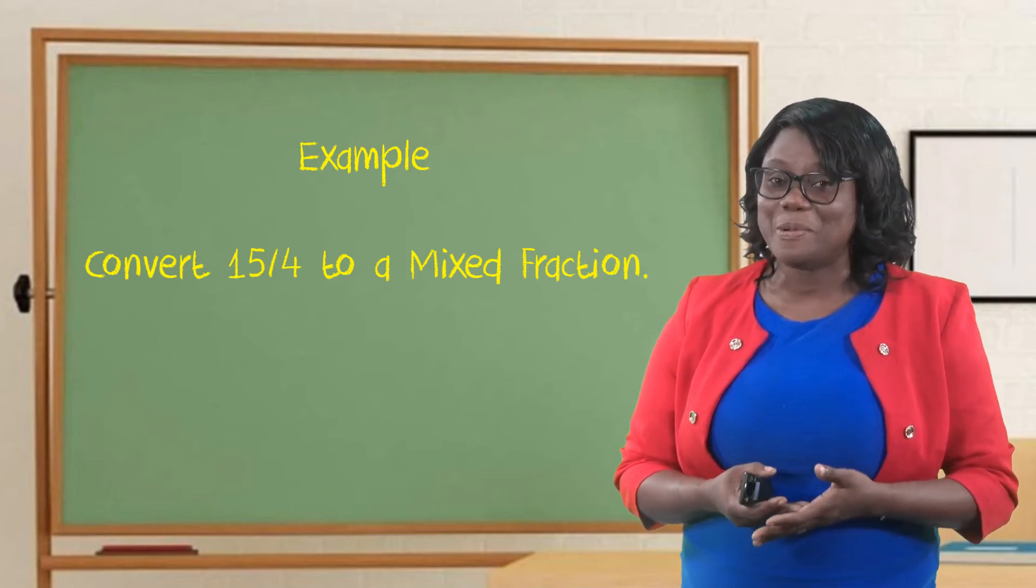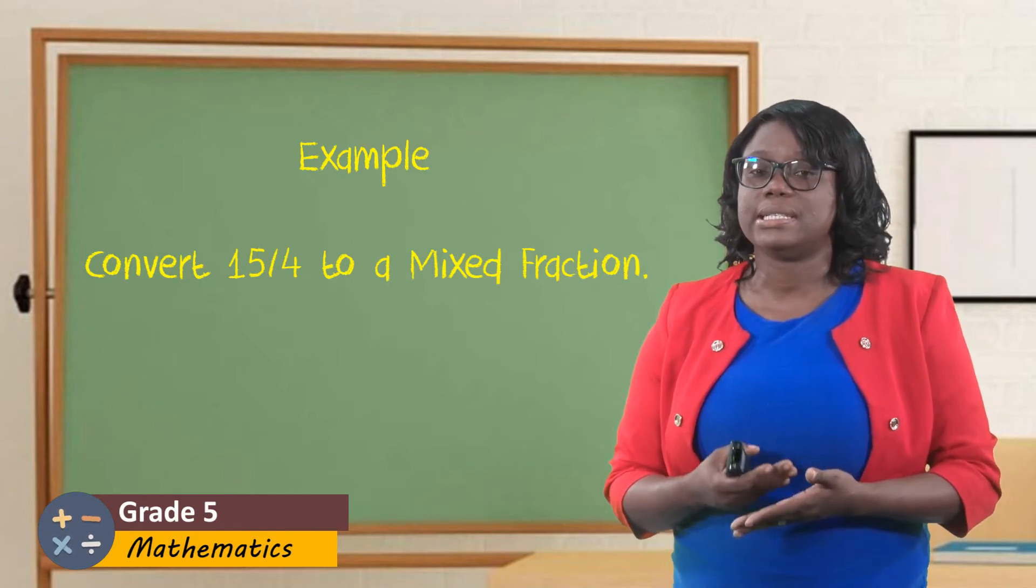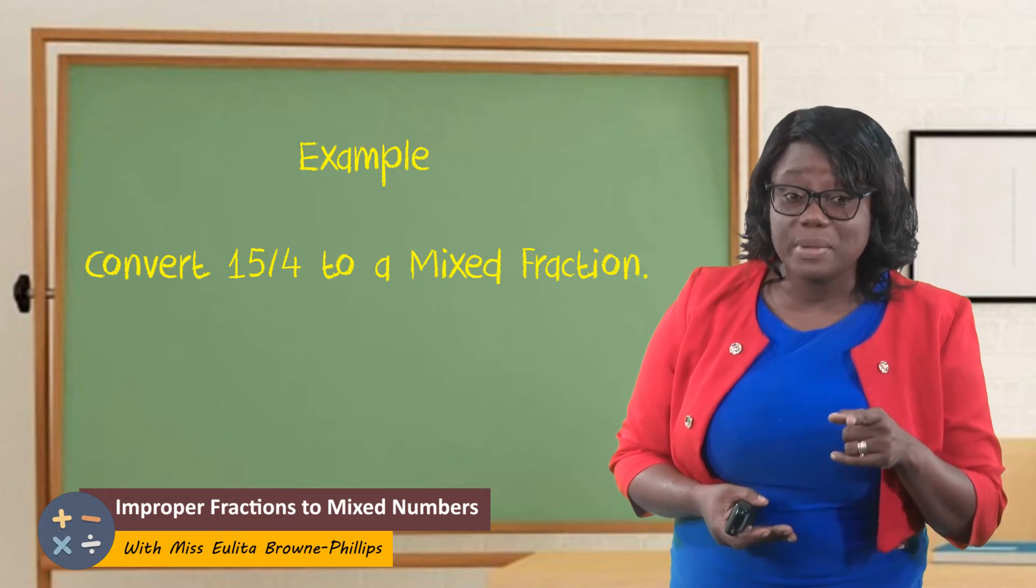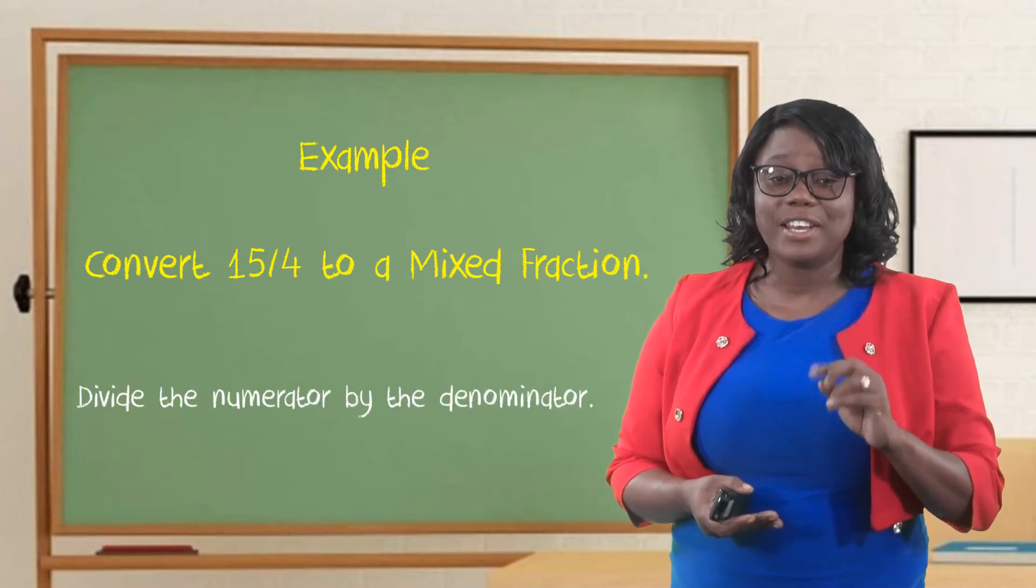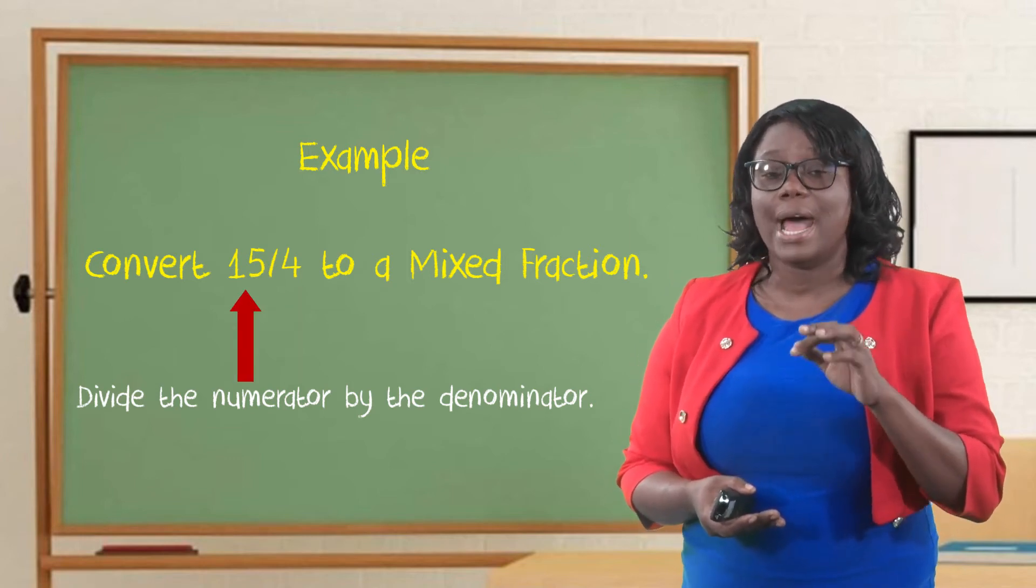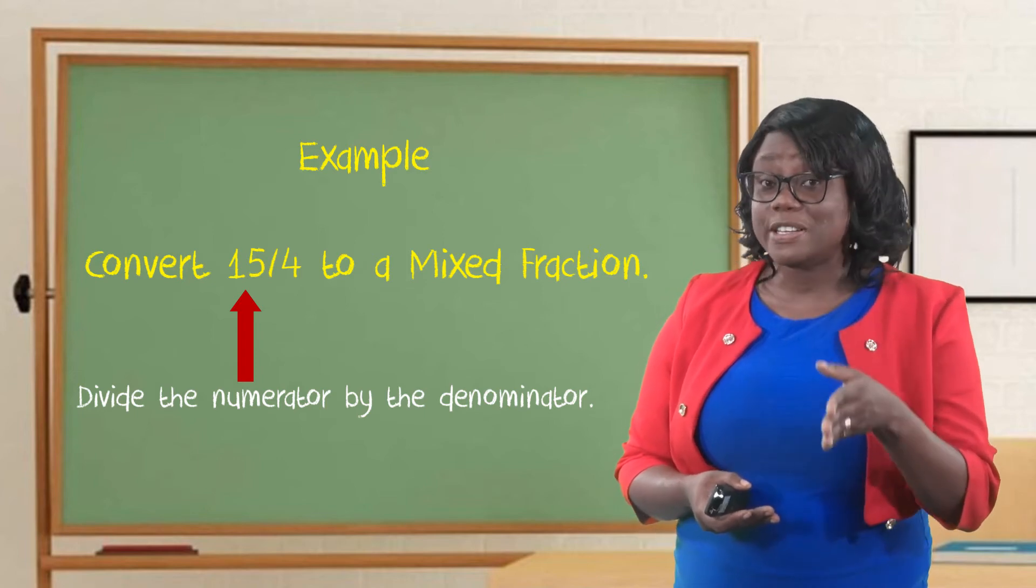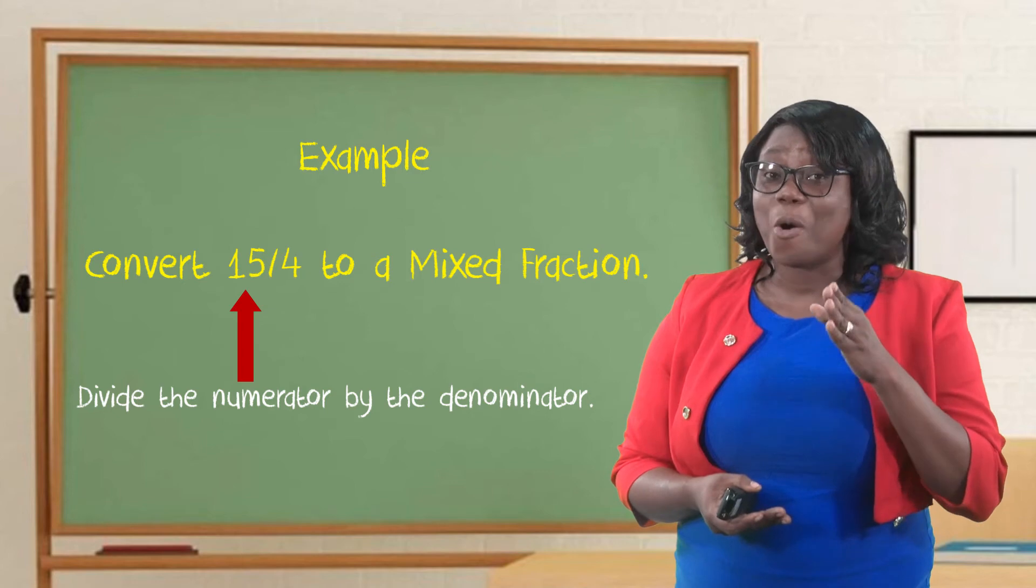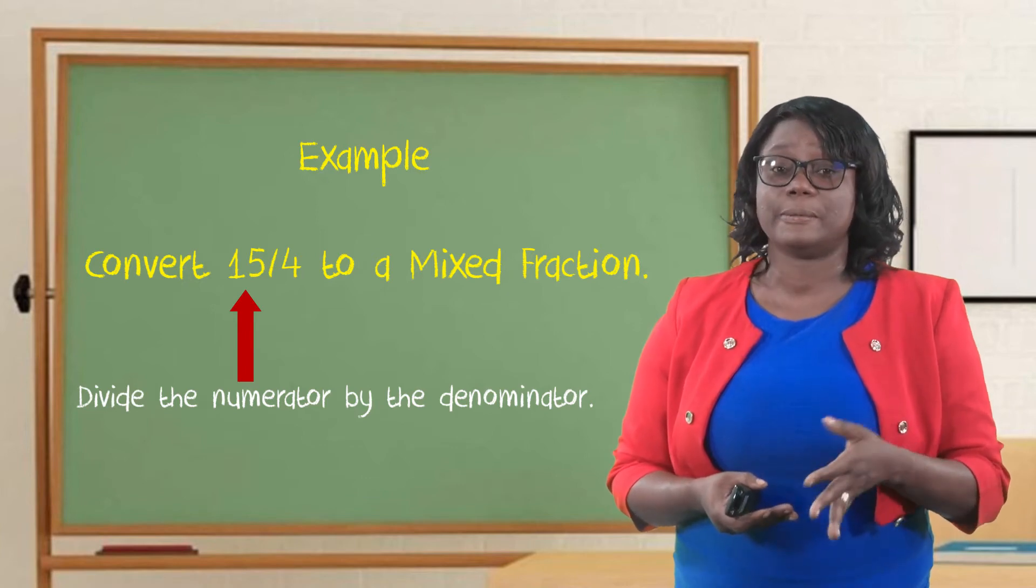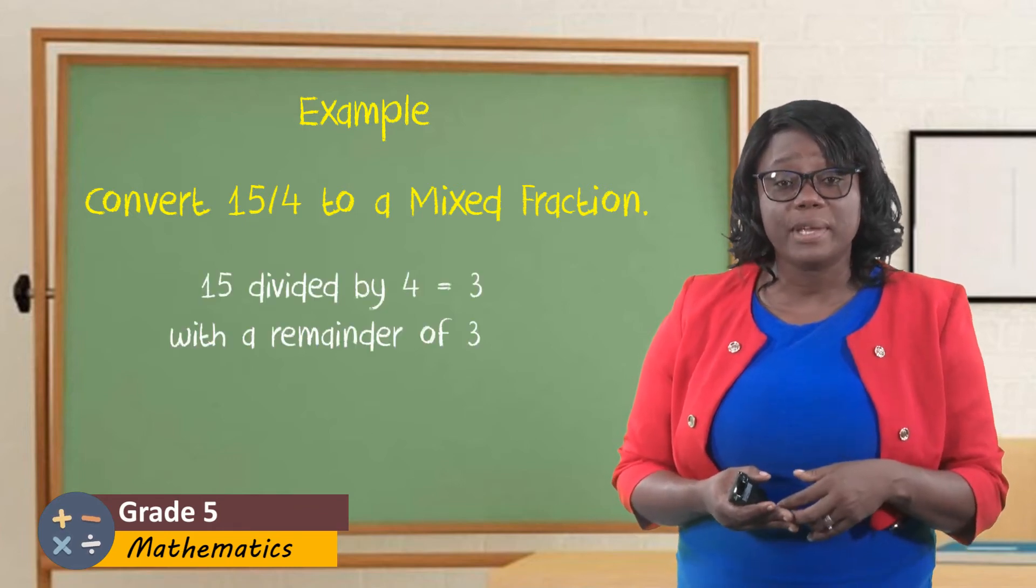So we're going to go across quickly to an example. Don't be afraid. It's quite simple once you get the hang of it. So our example would be, convert 15-fourths to a mixed number. Step one. What did we say we must do? Yes, divide the numerator by the denominator. So let's identify the denominator. The denominator is 4, and the numerator is 15. So we are going to divide 15 by 4. Now, here is where your tables come in. That's why I always encourage you to do your tables or to learn your tables. So 15 divided by 4. How many groups of 4 can we get from 15?